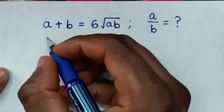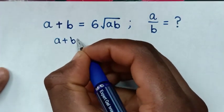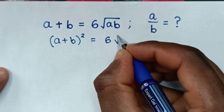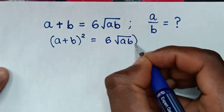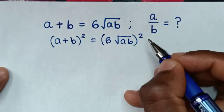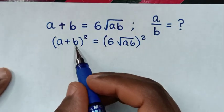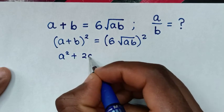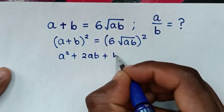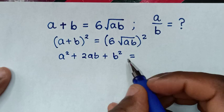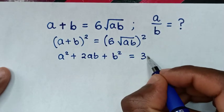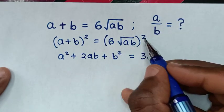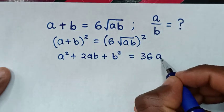So our equation will be (a plus b) squared is equal to (6 square root of ab) squared. We'll expand (a plus b) squared, then it will be a squared plus 2ab plus b squared is equal to 36. This square root will cancel with this square, so it will be times ab.